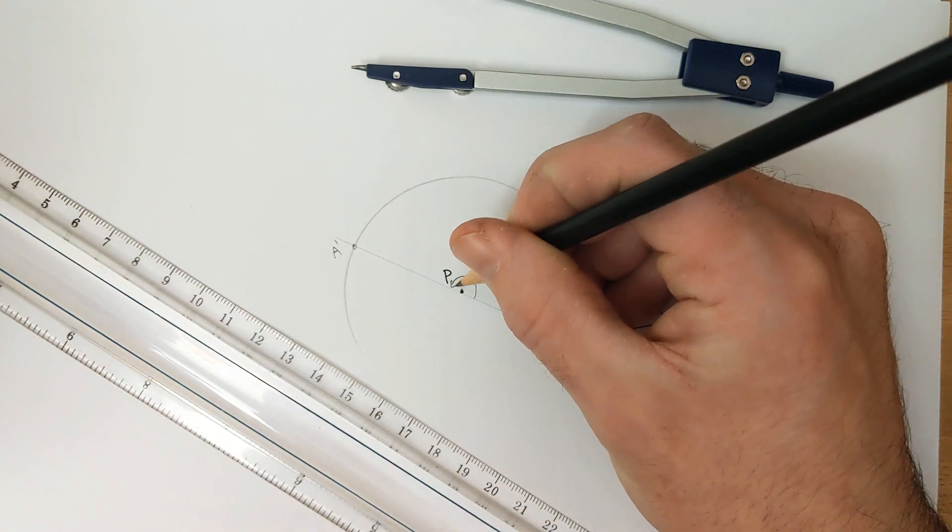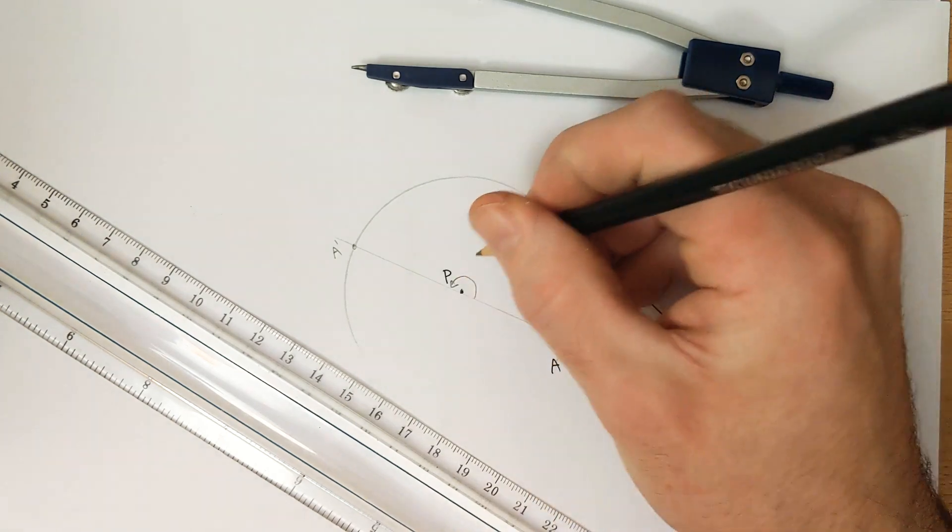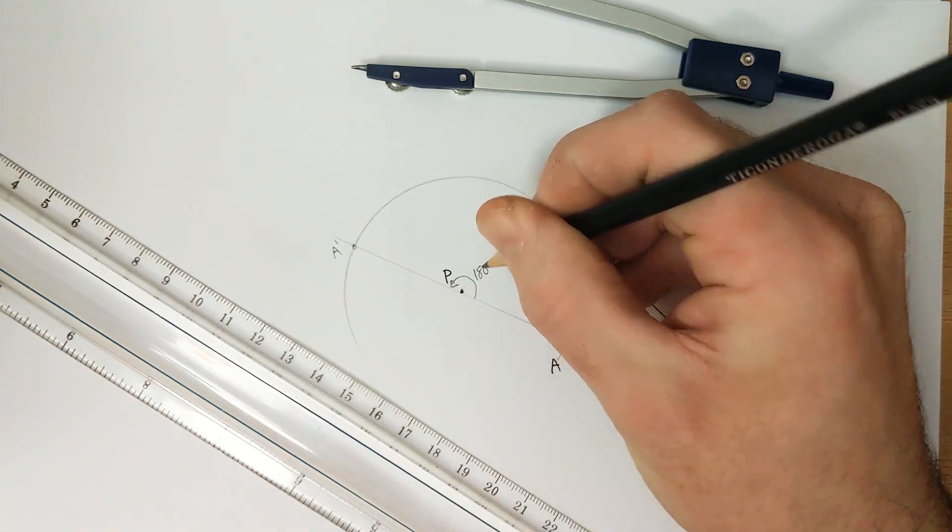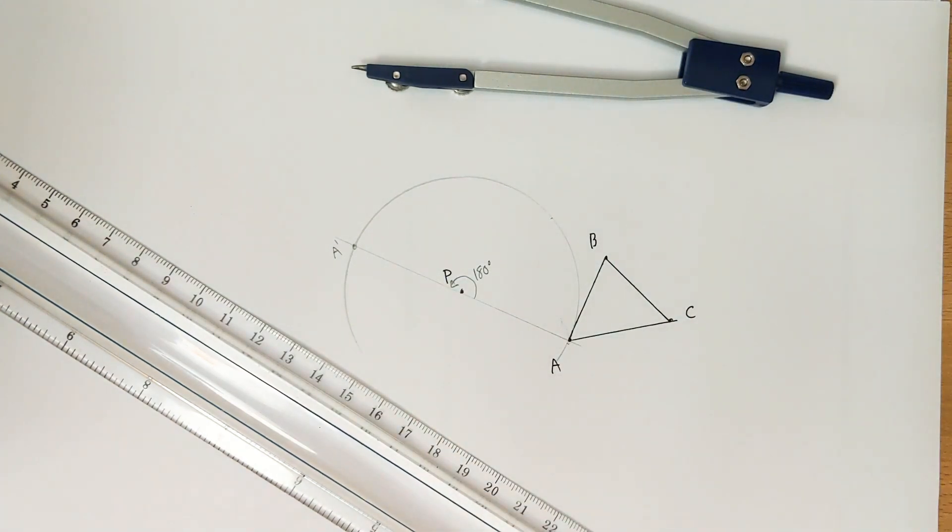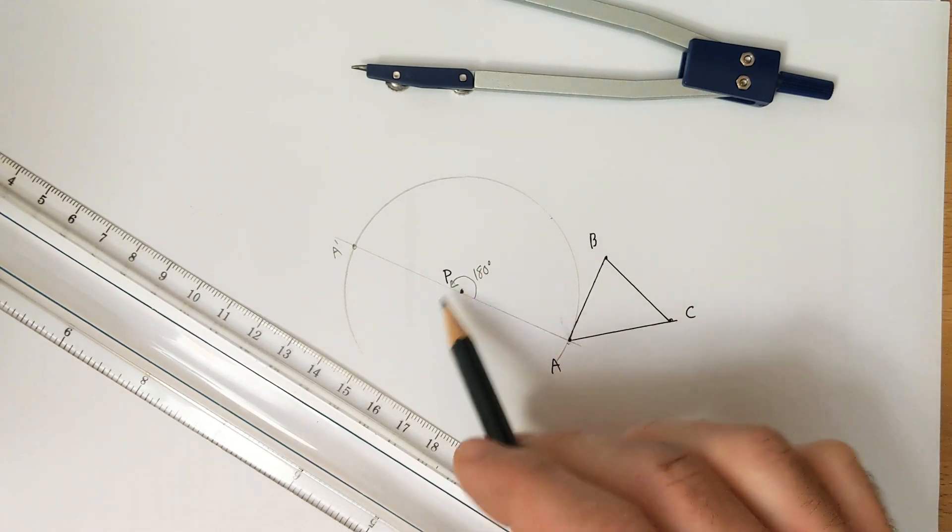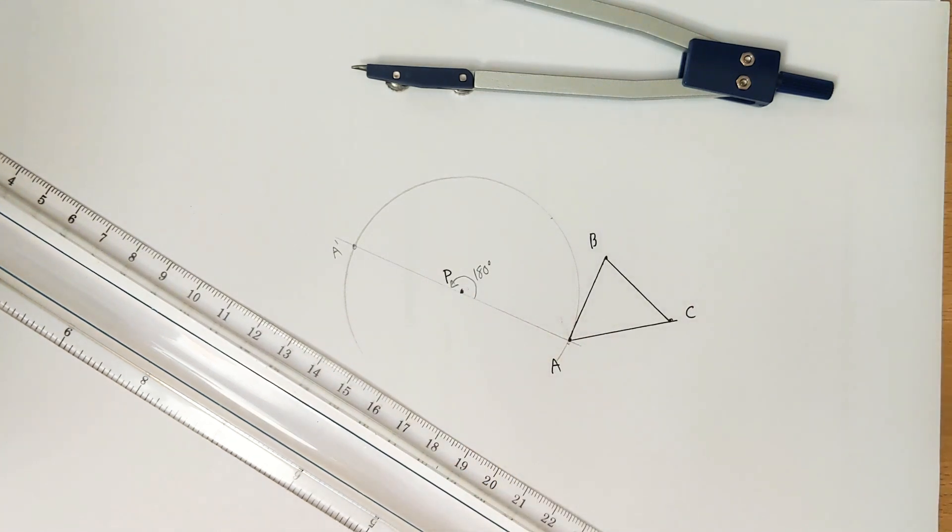Remember that this here is what we call a straight angle which has a measure of exactly 180 degrees when you have a straight line, and there's our angle of rotation centered at our center of rotation. There's one point done.